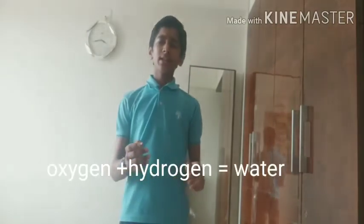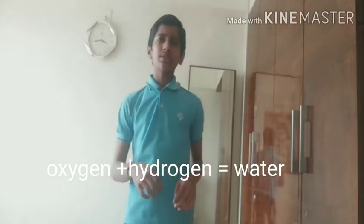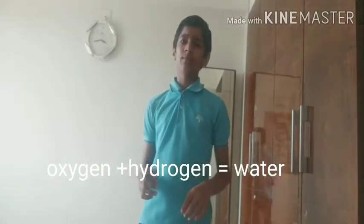Some examples of chemical reactions and their equations are: first, the reaction of oxygen and hydrogen to produce water. It can be written as oxygen plus hydrogen equals water. Here, oxygen and hydrogen are reactants and water is the product. The second is the reaction of sodium